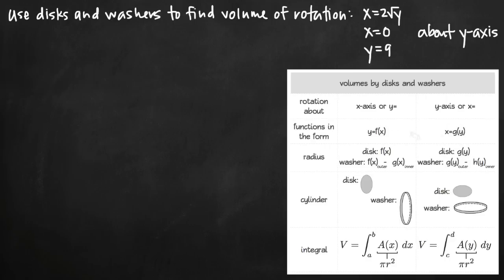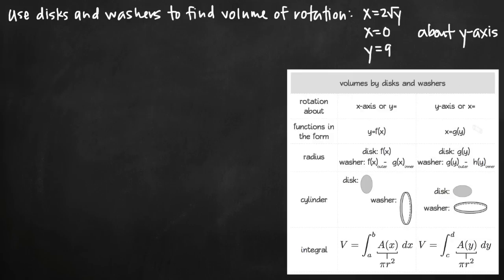We're in the second column, which means we need our functions in the form x equals g(y), and in our case we already have that. It doesn't matter if you have lines in the form x equals a constant or y equals a constant — so x equals 0 and y equals 9 are just lines and we can leave them alone. But anything more complicated, because we're in the second column, we need it defined as x equals something in terms of y, and we've got that.